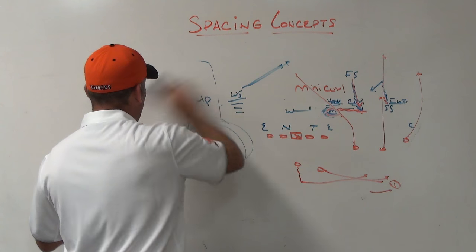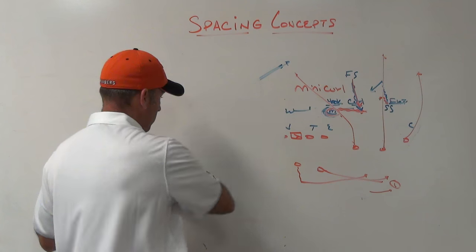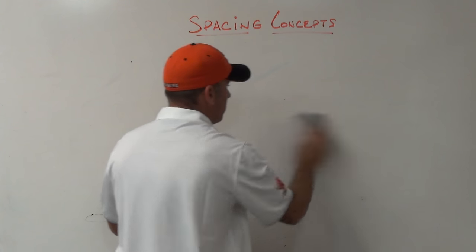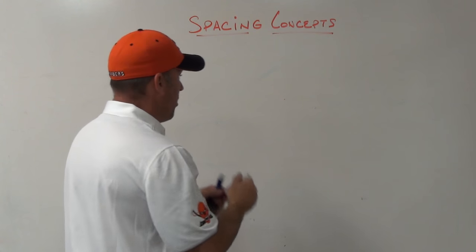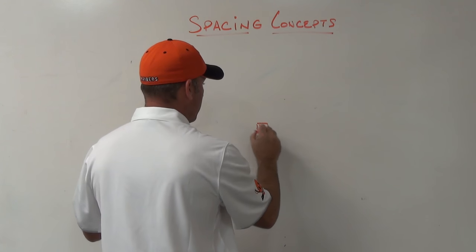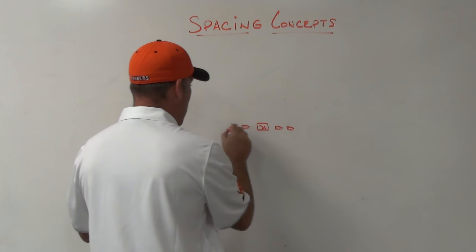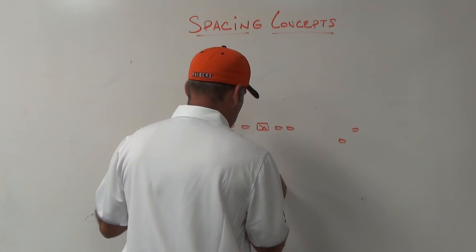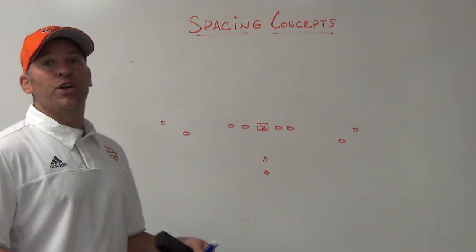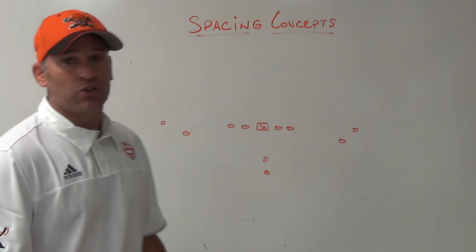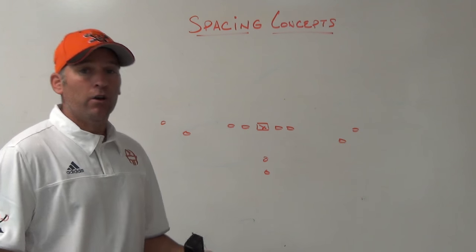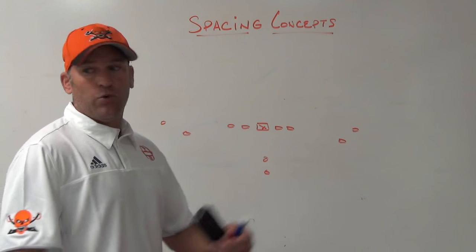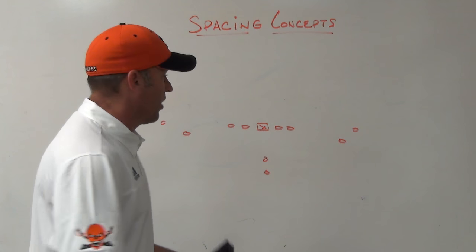Spacing routes are good intermediate throws — easy for the quarterback to execute. They can be done multiple ways. A lot of good teams will motion and shift guys and then run spacing so they change who one, two, and three are. They'll trade you or shift you into situations where one, two, and three are constantly changing, which makes it harder on the defense.